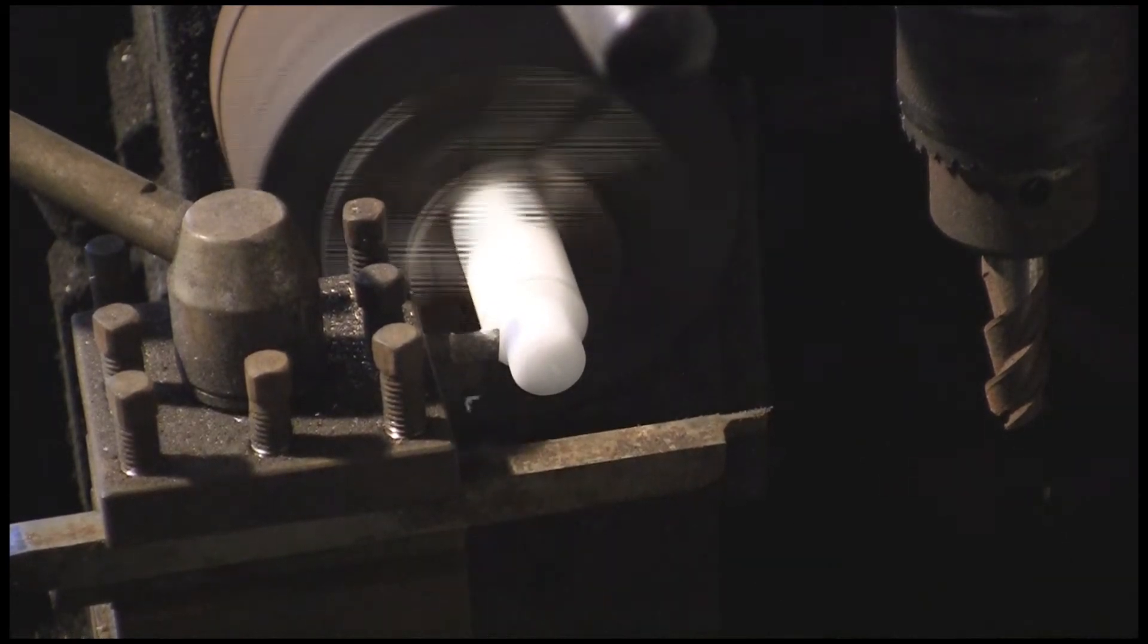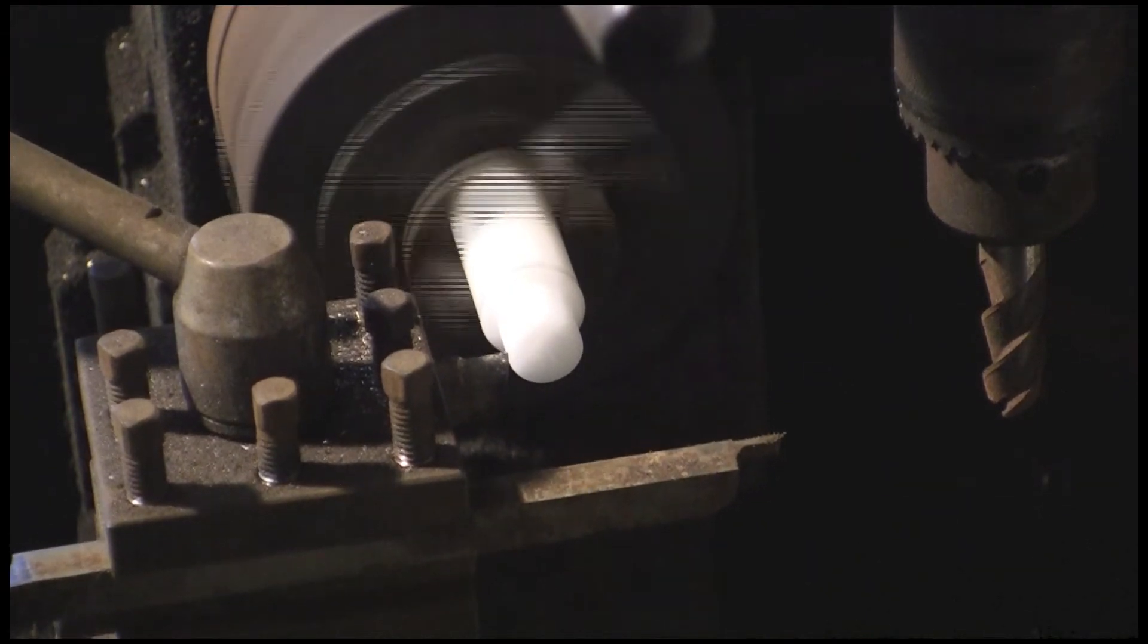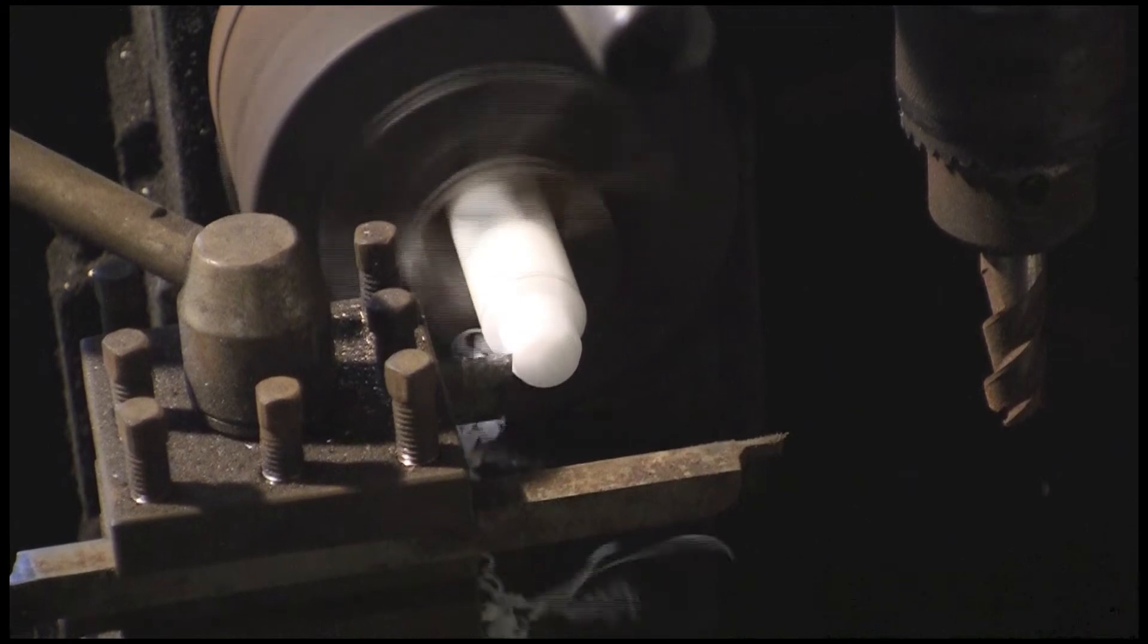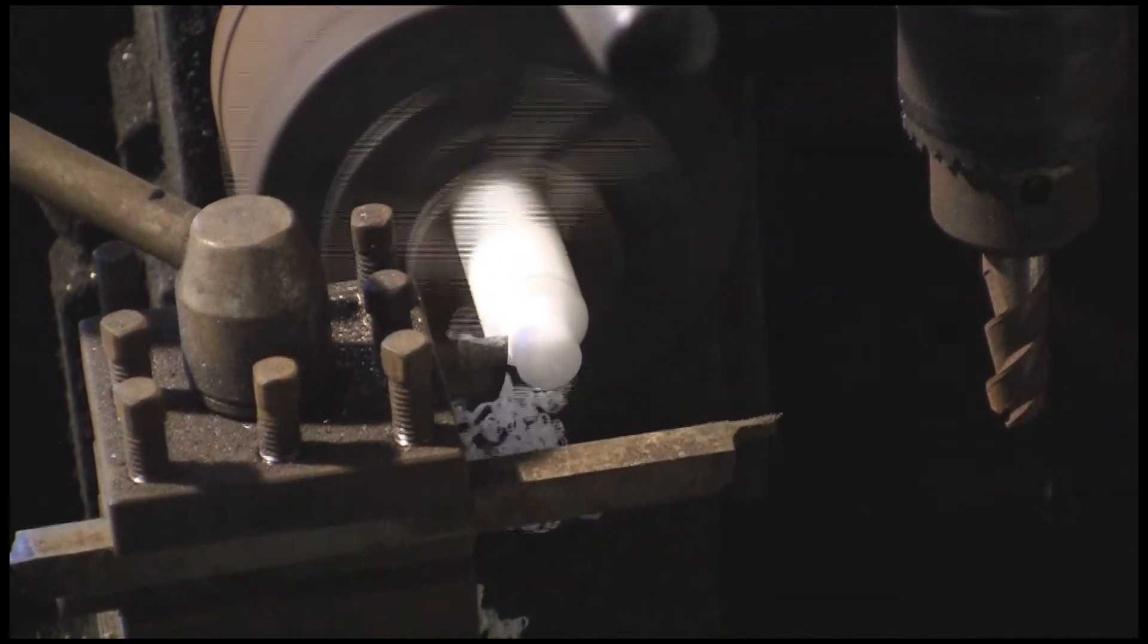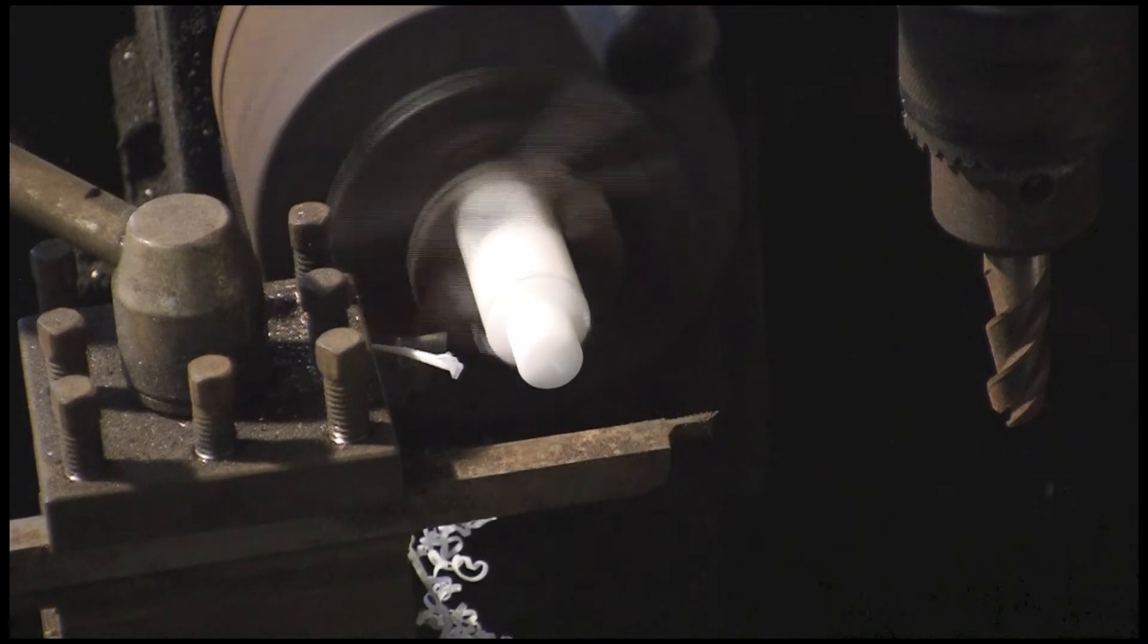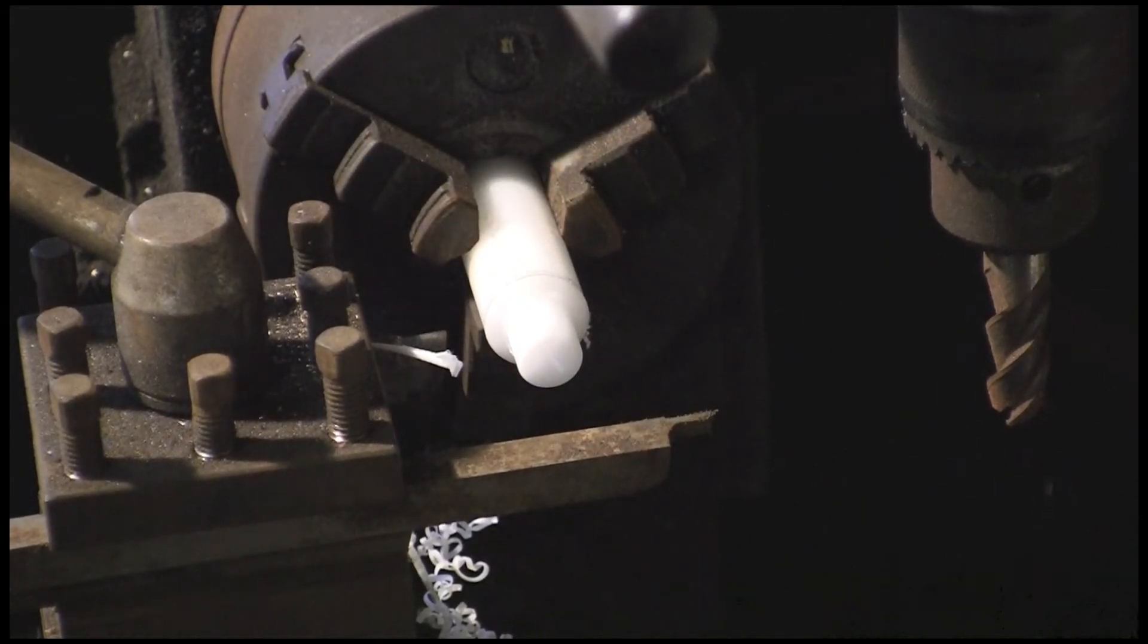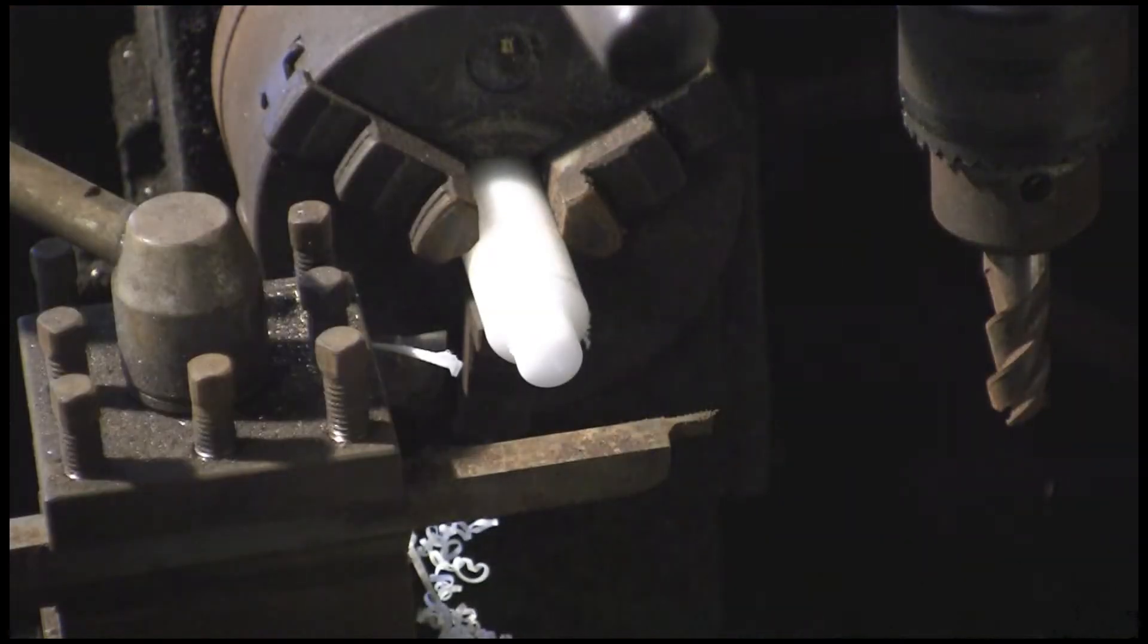Now this old lathe I'm using, it's a little tiddly old model makers lathe. It's not particularly accurate. So I don't tend to use any of the gauges and marks on it to gauge how far we're going. It's basically done by eye. So I have to stop quite regularly and get the old vernier out and check the sizes.